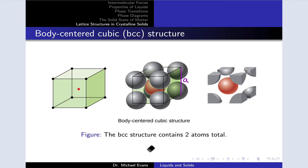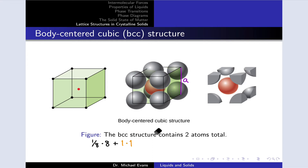Here's the BCC structure with edge length labeled A. Let's talk about the number of atoms contained within the unit cell. We have atoms at each of the eight vertices; one-eighth of each atom is contained within the unit cell, giving one atom total from the vertices. The atom at the center of the body is entirely contained within the unit cell. So we've got a total of two atoms inside the body-centered cubic structure.